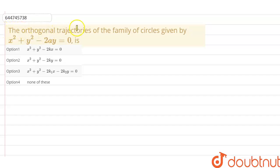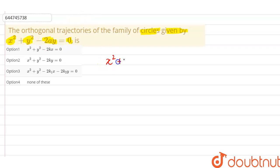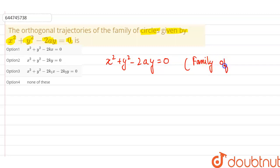The orthogonal trajectory of the family of circles given by the equation x² + y² - 2ay = 0. So the given equation is x² + y² - 2ay = 0, which is the equation of the family of circles. Consider this to be equation number one.